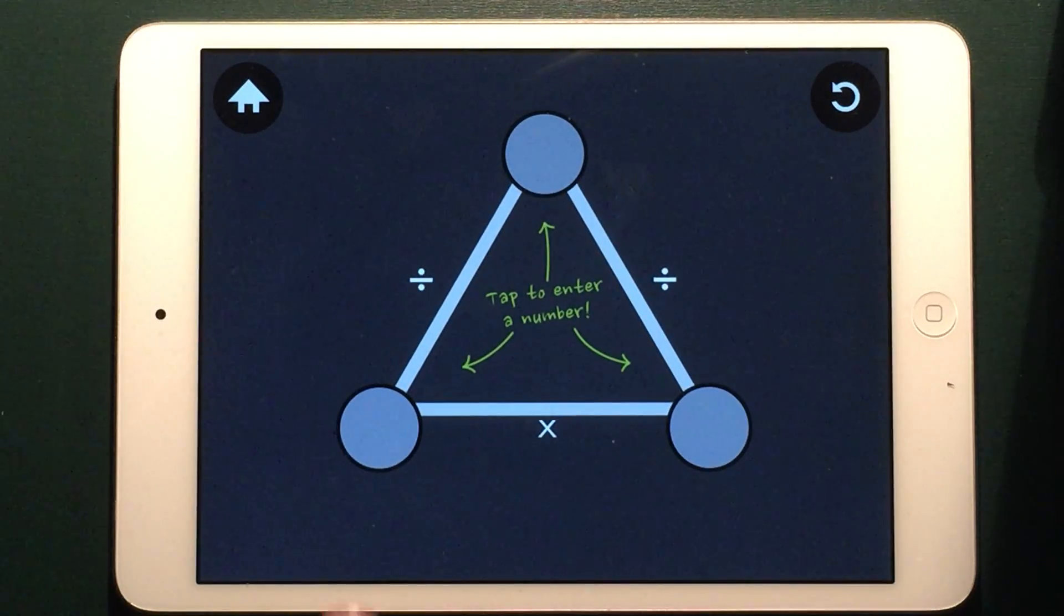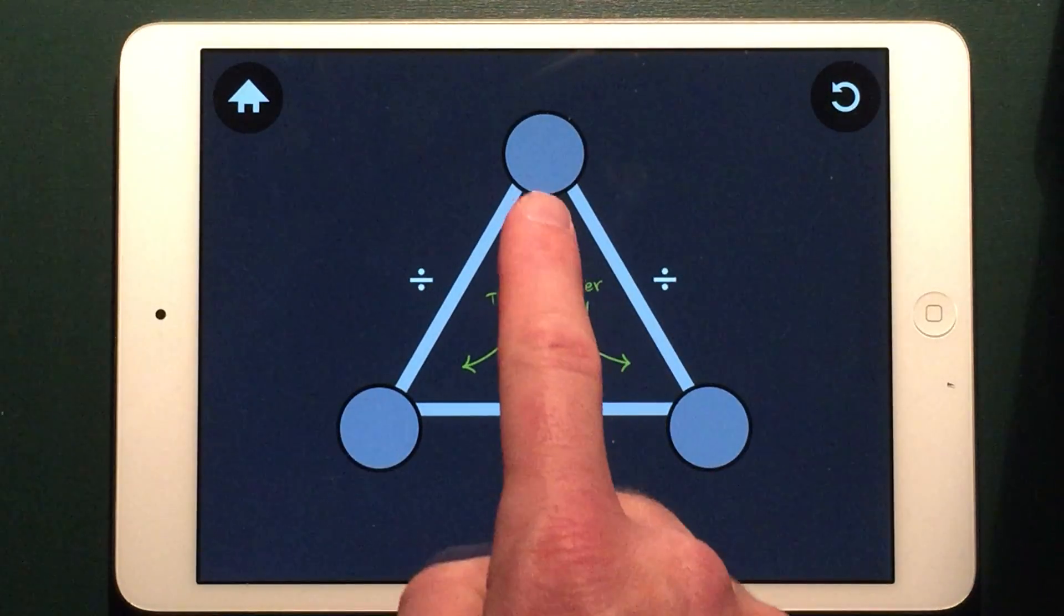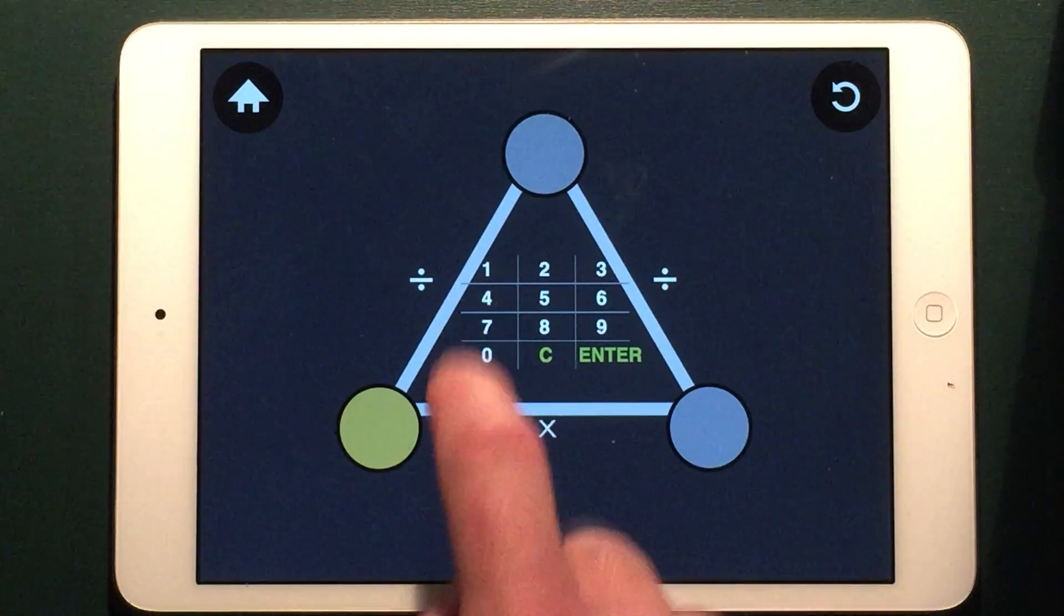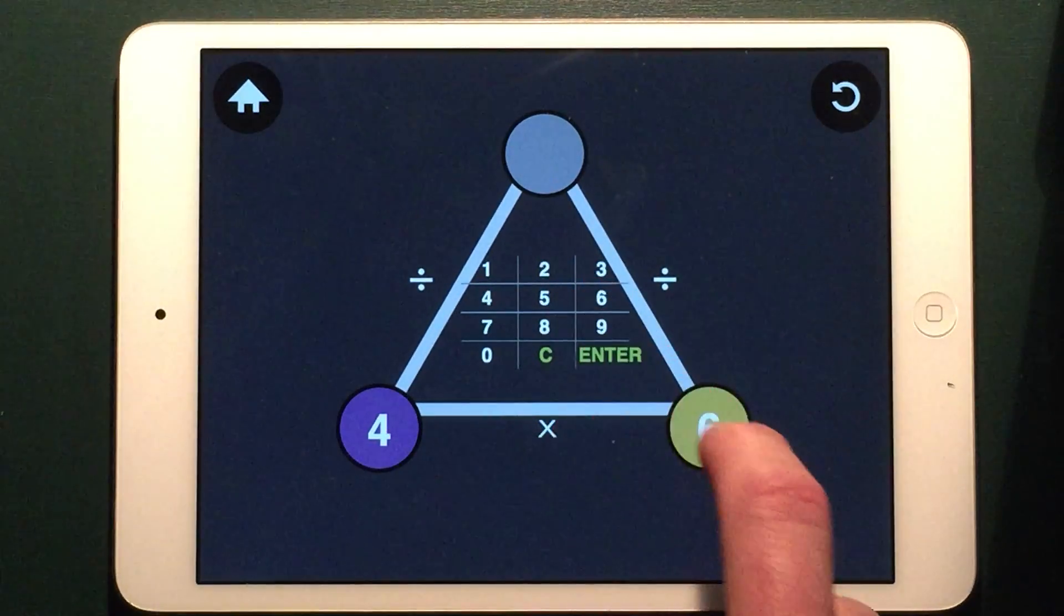In Explore mode, you need to enter numbers in the three circles to correctly complete a Math Mountain. I'll enter a number in the lower left first, and then the lower right.